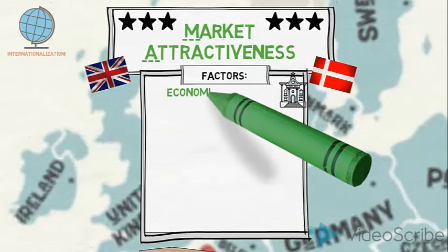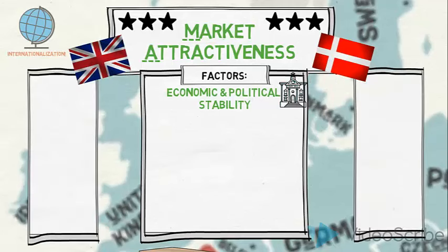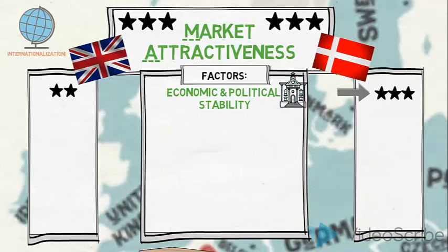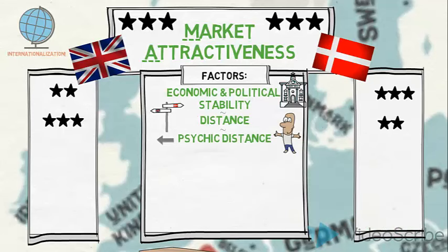Looking at a country's general economic and political stability provides knowledge about the general prospects of doing business in either country. Both countries are rated well, but the UK is slightly lower, so we give the UK two stars and Denmark three, indicating Denmark is most attractive on this factor. The physical distance from the home market impacts costs for travel and distribution, and could influence delivery times. The UK market is closer to France than Denmark, making the UK more attractive on this factor. Psychic distance addresses perceived closeness — French Cakes understand British business culture better than Danish, so they feel shorter psychic distance to the UK.